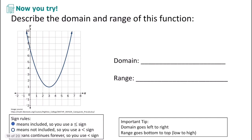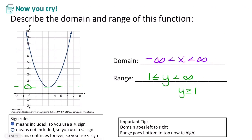Pause the video and try describing the domain and range of this parabola on your own. Remember from Algebra 1 that parabolas' x values go on forever — to positive infinity and negative infinity — so the domain is negative infinity less than x less than infinity. For the y values, they have a starting point at 1, which is included, and then they go up forever in the positive direction. So the range goes from 1 to positive infinity, or you can write y is greater than or equal to 1.